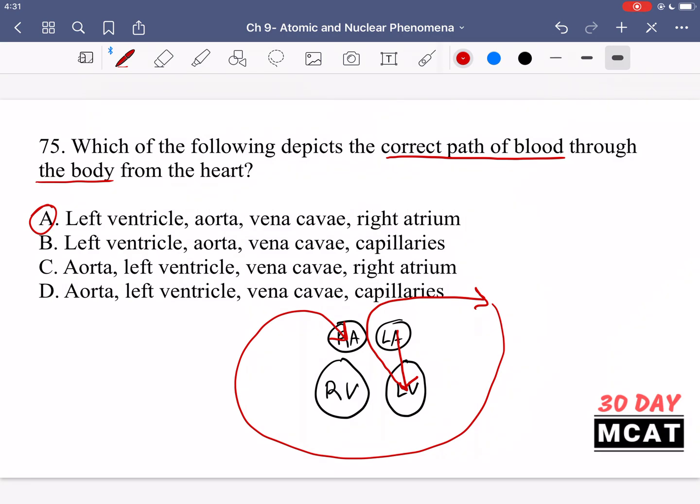Option B, the first two are correct, or the first three are, but then this is saying capillaries after, that's incorrect. It would actually go through the body, and after the aorta, it would eventually end up in the capillaries, and then the capillaries would come before the vena cava. But this is saying capillaries come after vena cava, that's incorrect.